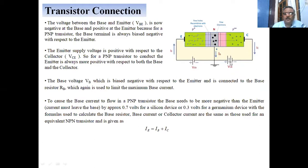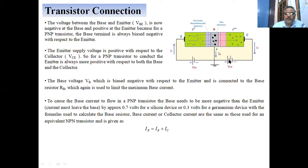For a PNP transistor to conduct, the emitter is always more positive with respect to both the base and the collector. The base voltage is biased negative with respect to the emitter and connected to a base resistor, which limits the base current. To cause base current to flow in a PNP transistor, the base needs to be more negative than the emitter by approximately 0.7 volts for a silicon device and 0.3 volts for a germanium device.